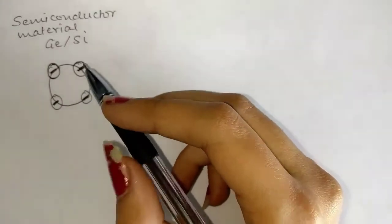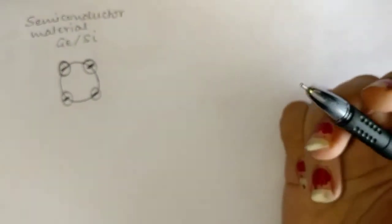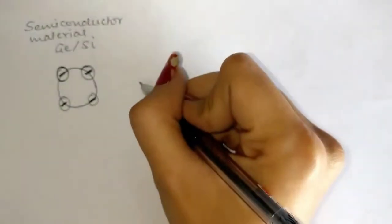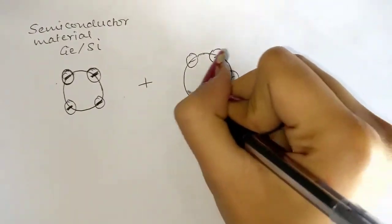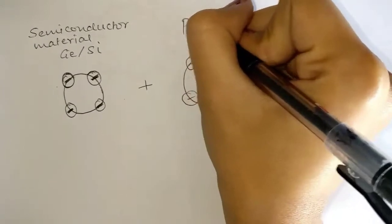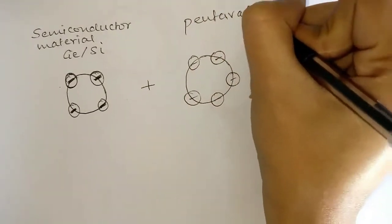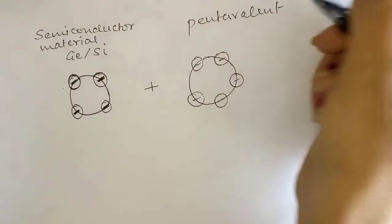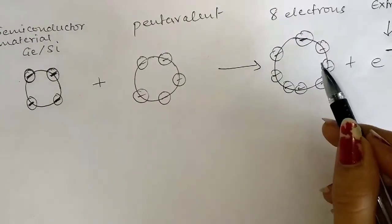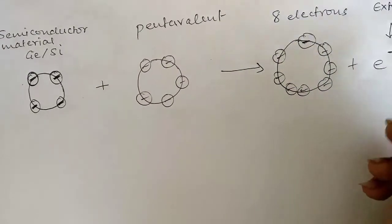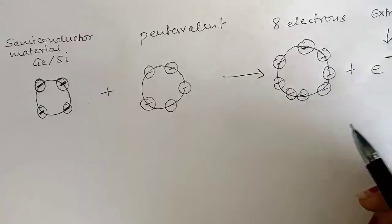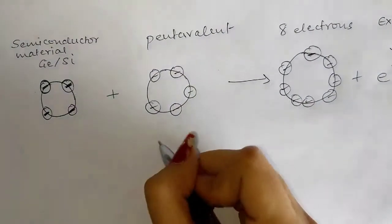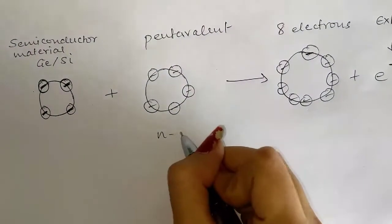Semiconductors are elements with four electrons in their outermost shell. When a pentavalent impurity is added to it, the octet gets completed, plus an extra electron remains in the material. Therefore, it gets a negative charge, and hence the material is known as n-type.